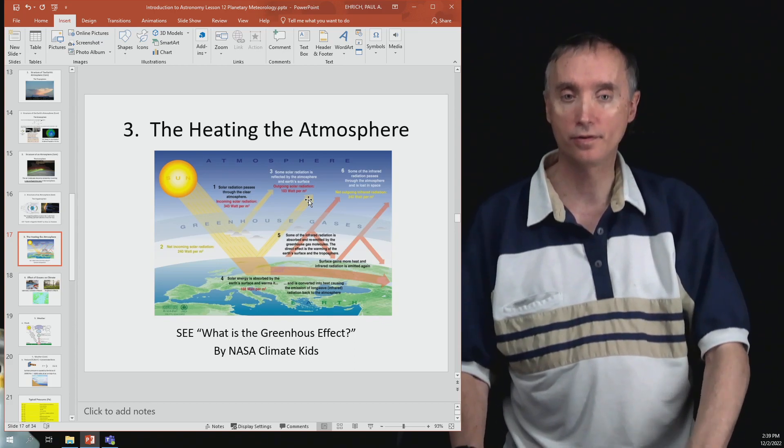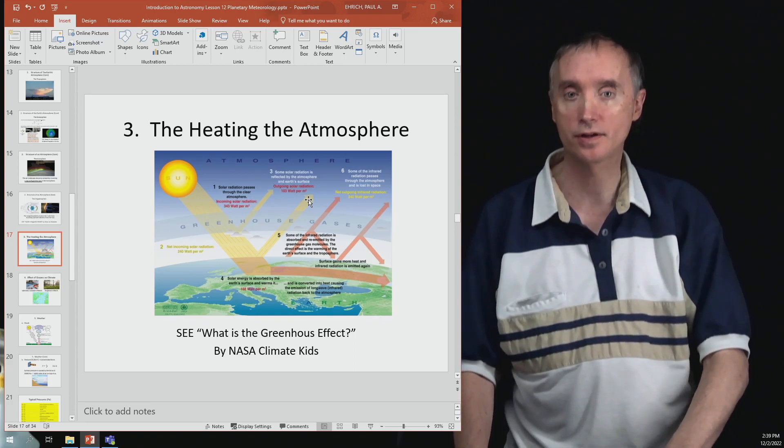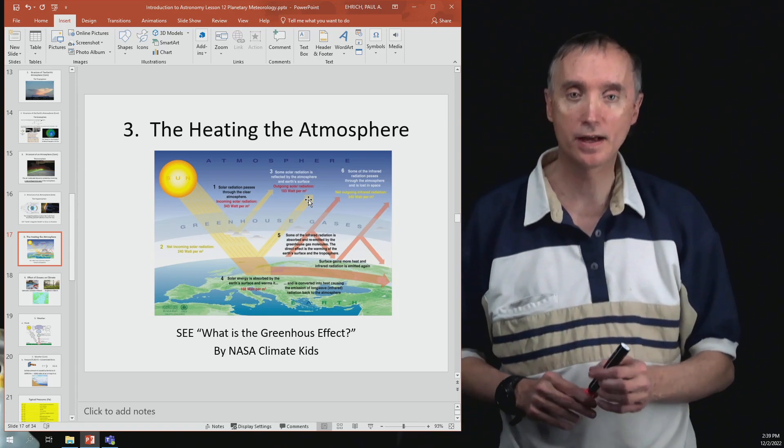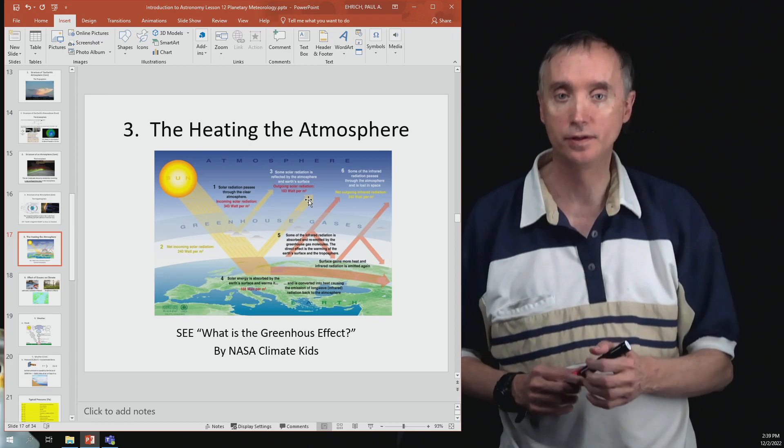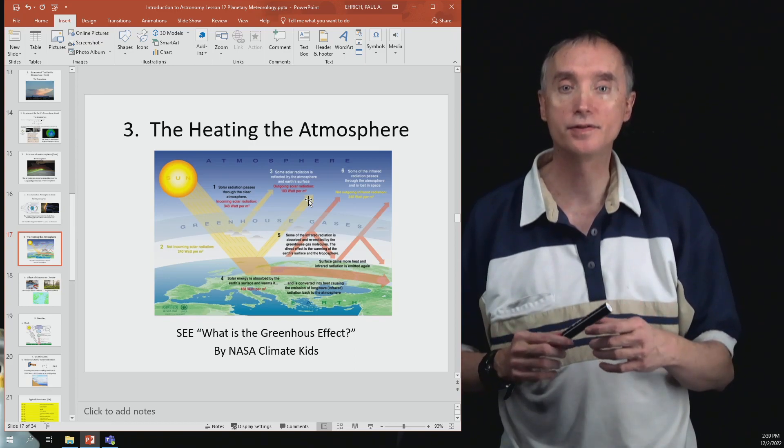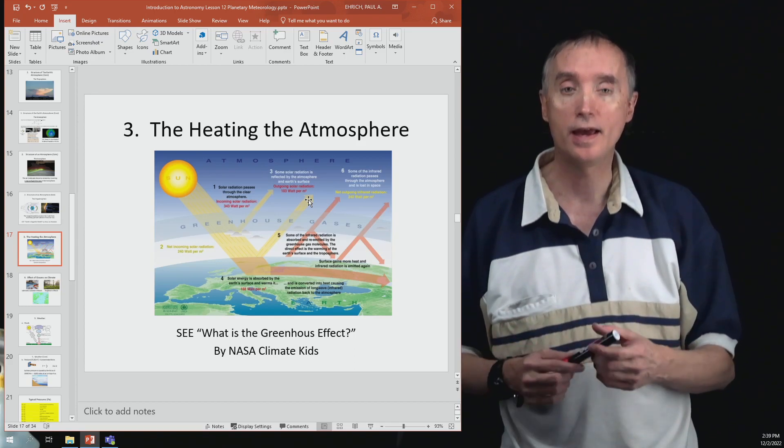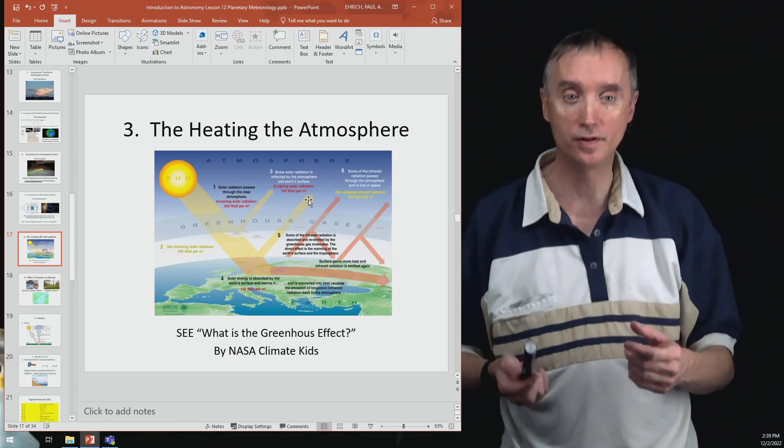So there are other things that act like a greenhouse gas. What's going on is that light from the Sun, a lot of it is in the form of ultraviolet light and also visible light.